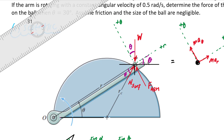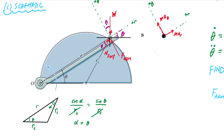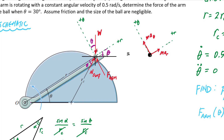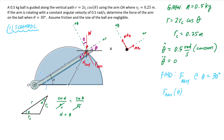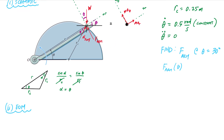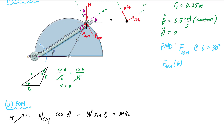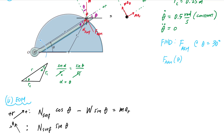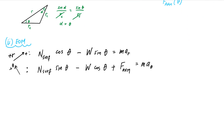Now I use the drawing to write the equations of motion. In the positive radial direction: N_surface · cos(theta) minus W · sin(theta) equals m·a_r. In the positive transverse direction: N_surface · sin(theta) minus W · cos(theta) plus F_arm equals m·a_theta. Those are my two equations of motion.